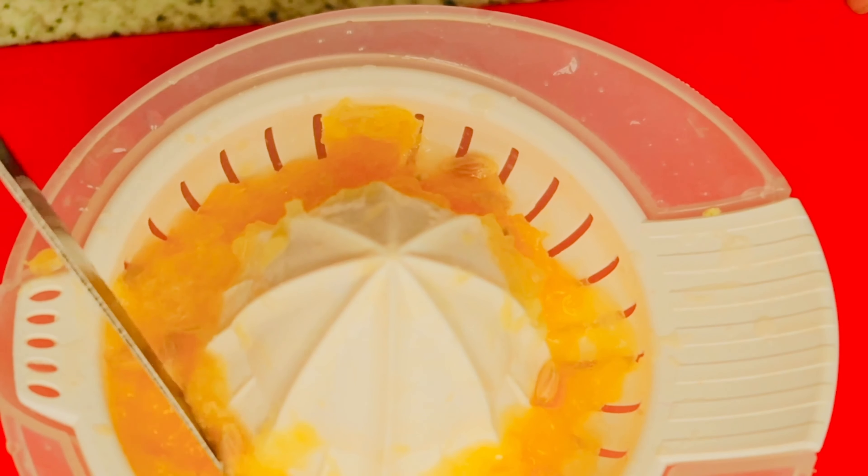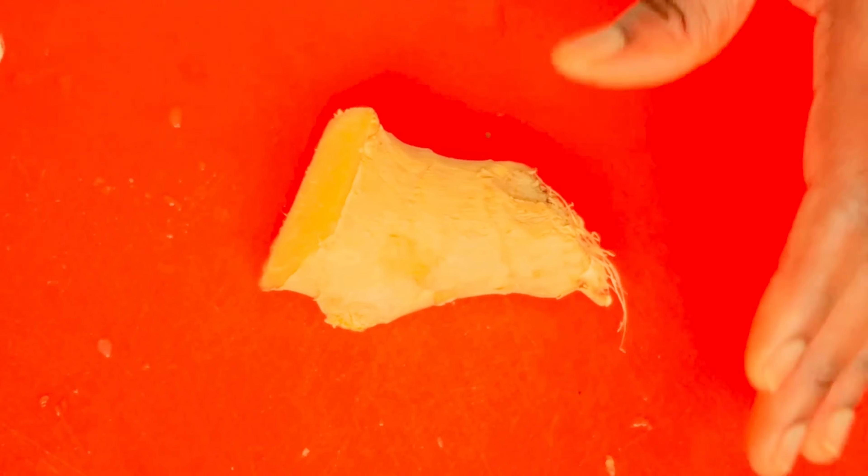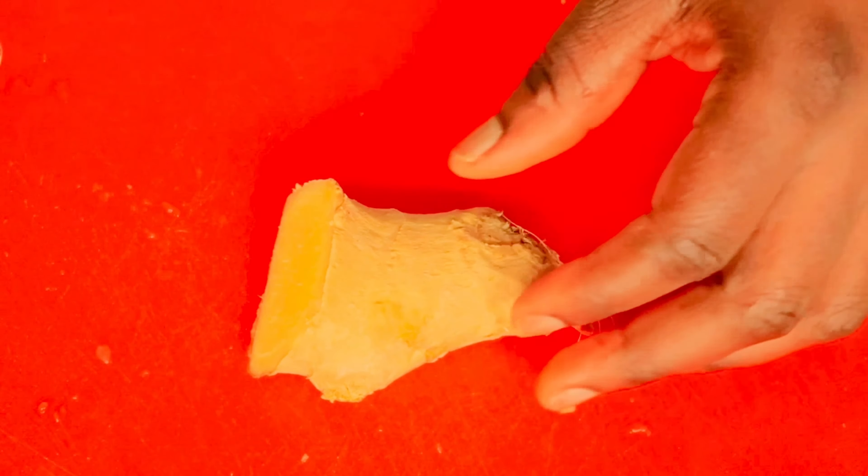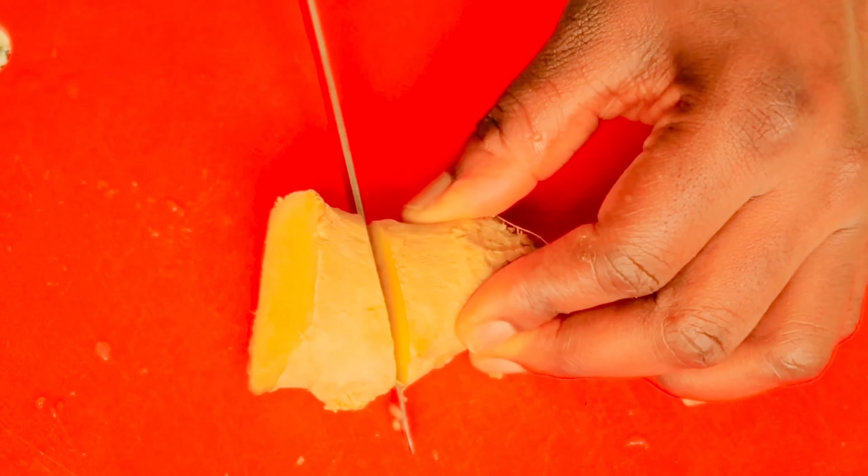I'll just remove the seed and set it aside. The next thing we need is ginger. I'll just cut a little bit of ginger. I'm gonna make use of this quantity.